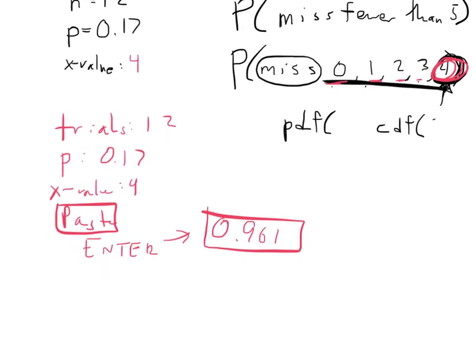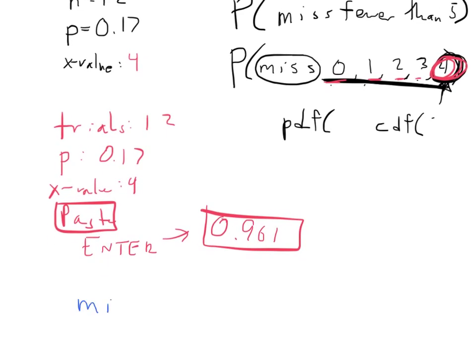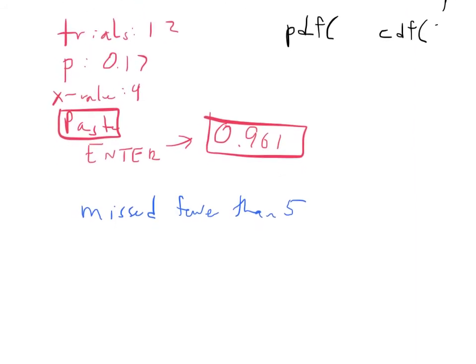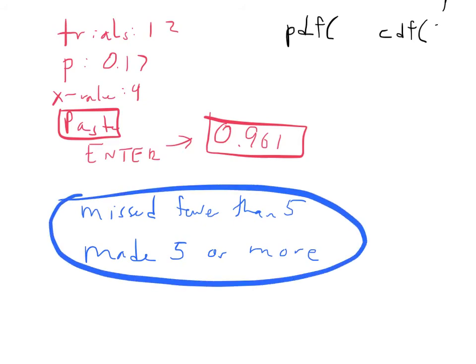Now, to lead into my next problem, I sort of want to ask you guys a question. If I say that he missed fewer than 5 shots, what's another way that you could say the exact same thing? Pause the video and think about that for a second. Think about another way you could express that same idea. We could say that he made 5 or more shots, or he made at least 5 shots. These two things would both be the same thing, and they both would give you this 0.961.